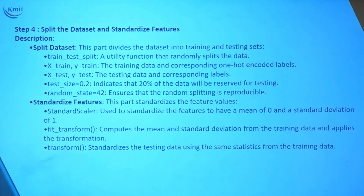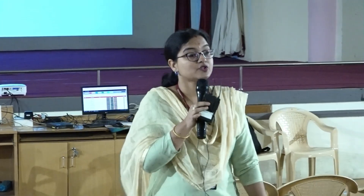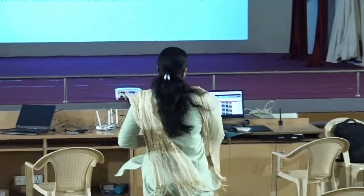Then we standardize. Why do we standardize the features? Consider calculating BMI: weight is in kilograms, height is in centimeters. We use standardization to bring them to the same scale — 1 centimeter equals 10 units, 1 kg equals 10 units, so all values are standardized.